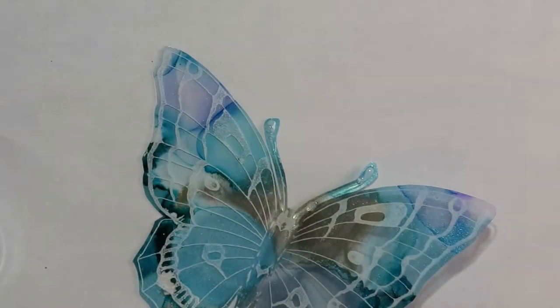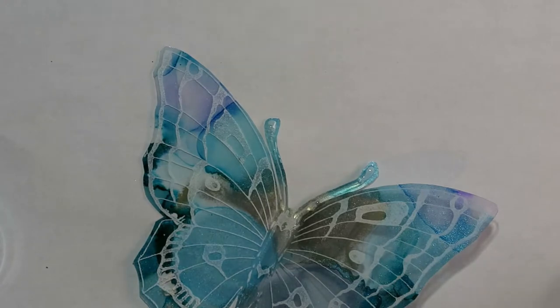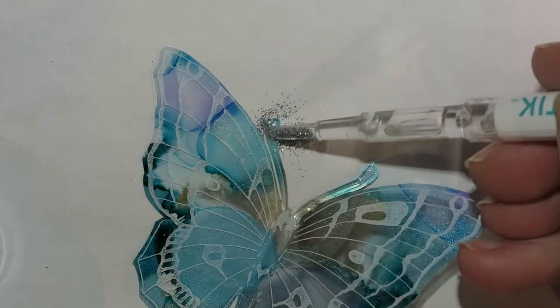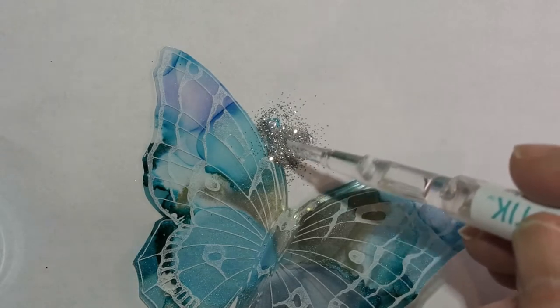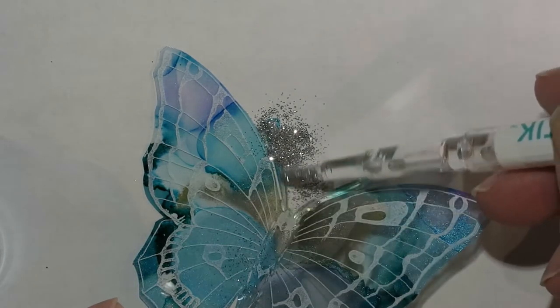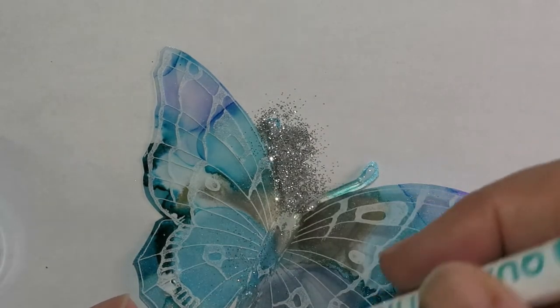I just run a little bead of glossy accents along his antenna or the body, wherever you are. And then I just drop little bits of the glitter onto this. And I just set it aside to dry. I think it may be glossy accents. It's fast. Maybe an hour or so before it was completely dry.